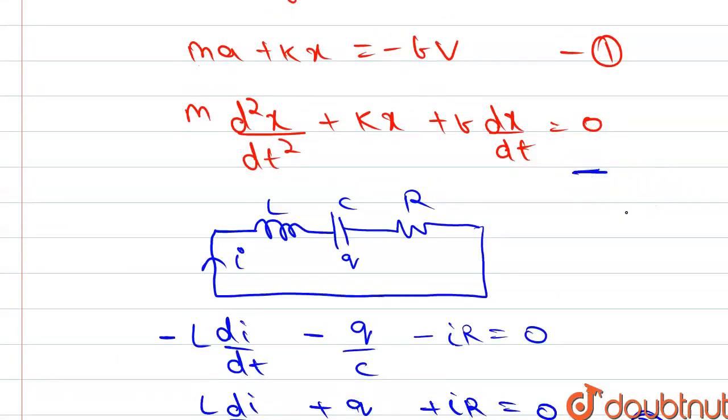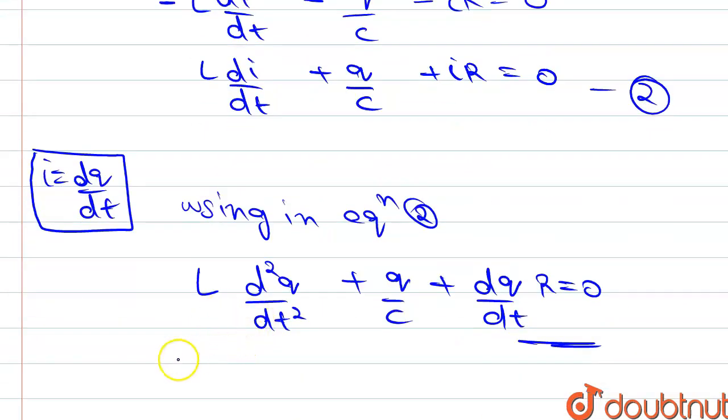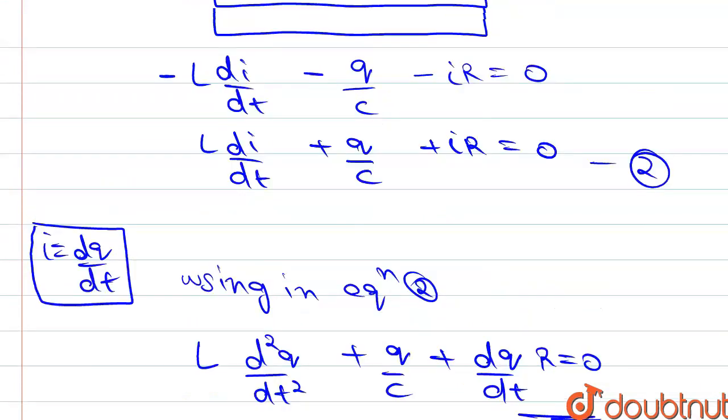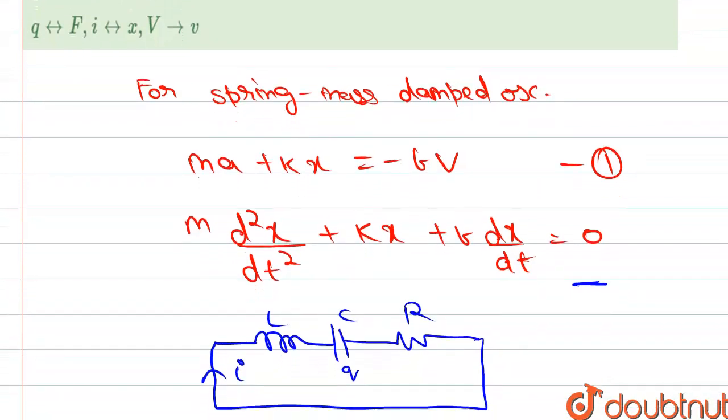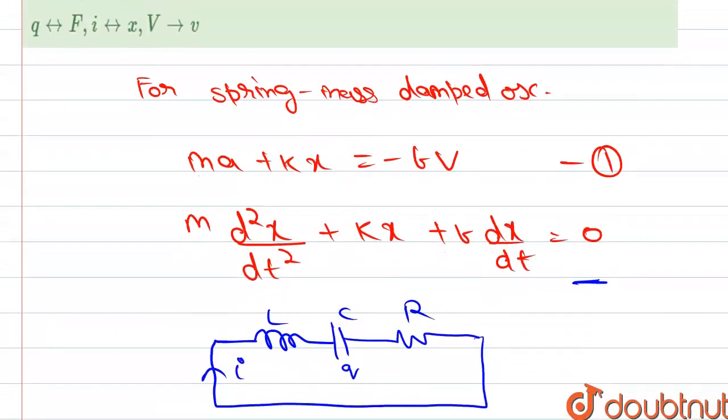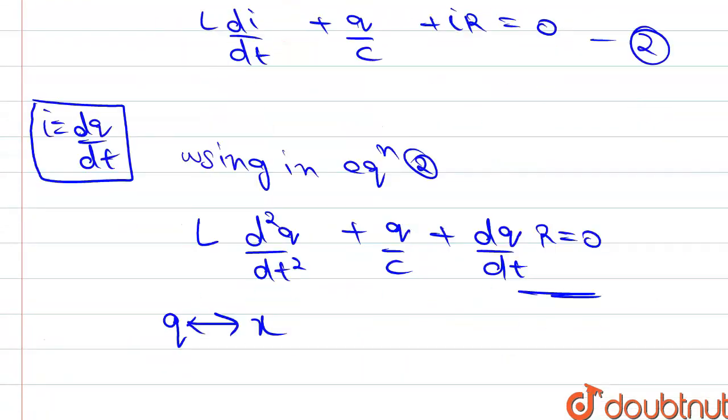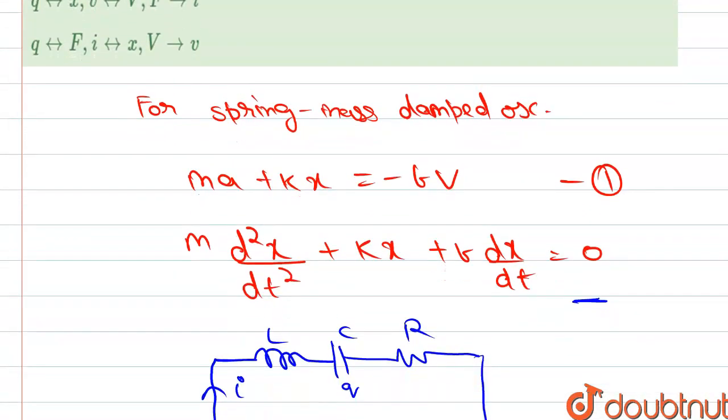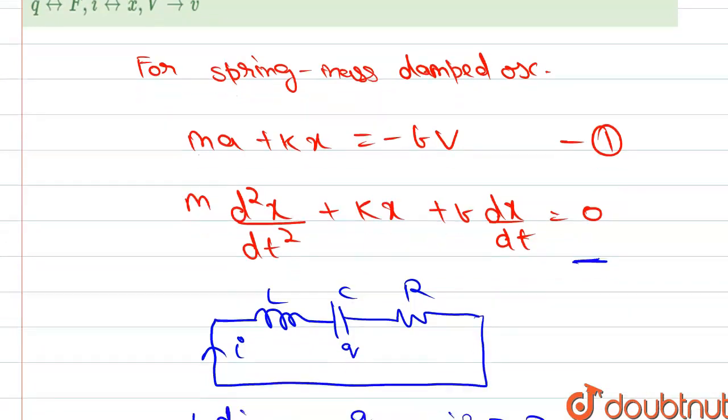d²q/dt² is equal to d²x/dt². So our charge q is similar to x, the position. Similarly, kx corresponds to q/c, and dq/dt is similar to dx/dt, so b is similar to R, and m is similar to L.